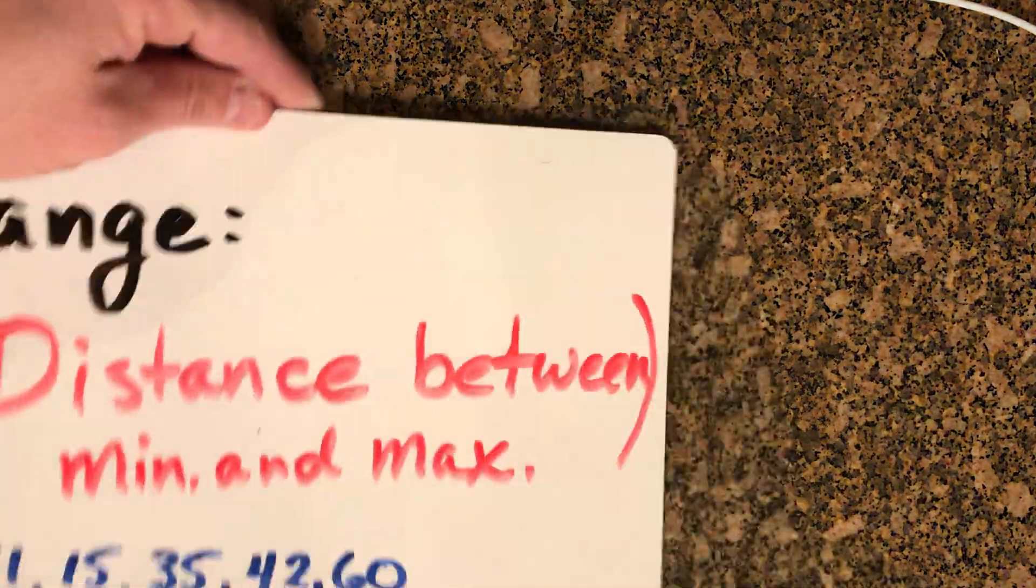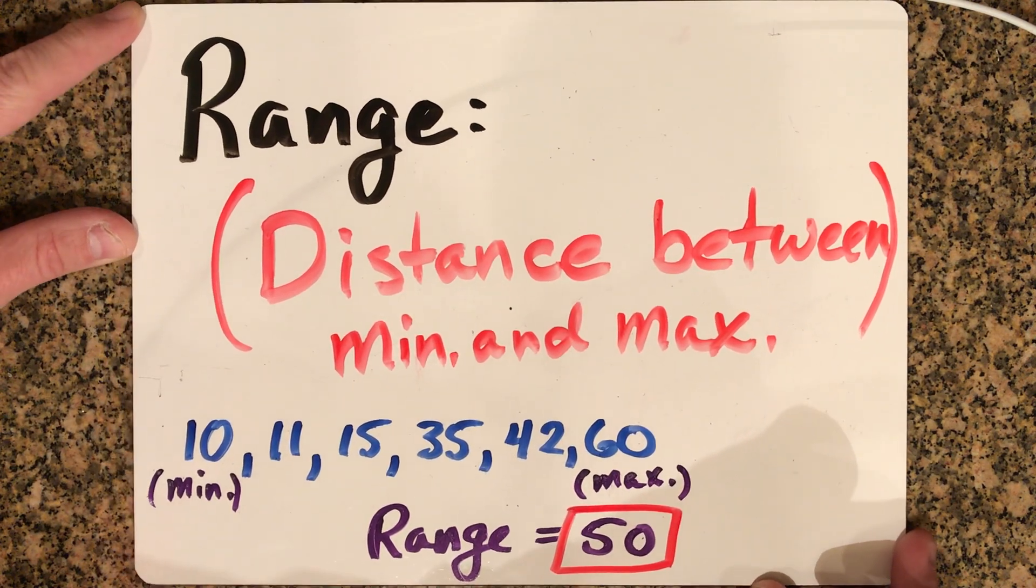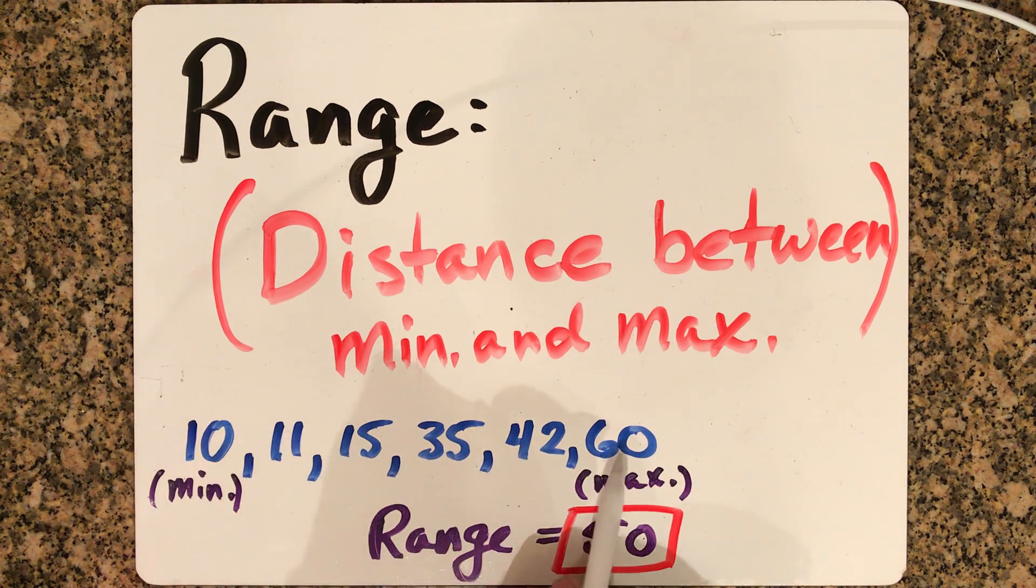The last item is the range. The range is the distance from the spread. If you look at the minimum value and the maximum value, the distance between them is your range. So from 10 all the way up to 60, that's 50 units away, so your range would be 50.